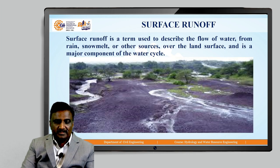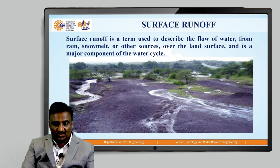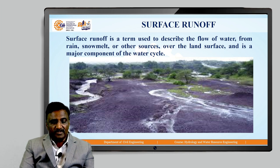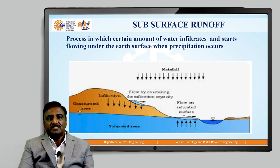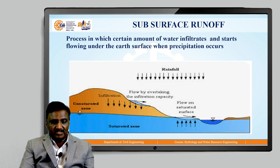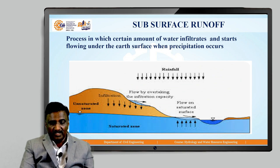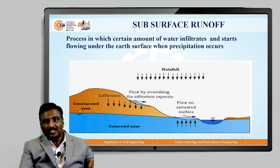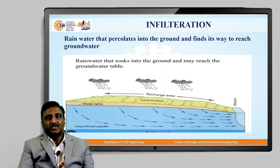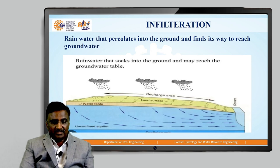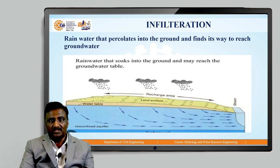Surface runoff is a term used to describe the flow of water from rain, snowmelt, or other sources over the land surface, and is a major component of the water cycle. Sub-surface runoff is the process in which a certain amount of water infiltrates and starts flowing under the earth's surface when precipitation occurs. Rainwater that percolates into the ground and finds its way to reach groundwater is called infiltration.